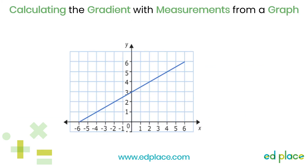Let's start by looking at how to calculate a gradient from a graph. The first thing we do is to draw two straight lines to turn your line into a right-angled triangle. For example, to find the gradient of this line, we draw in two lines as we can see here in red. It doesn't matter how big you draw your triangle — it will not affect your final answer. However, it is a good idea to make the triangle as large as possible, and to make things easier, use a whole number of squares.